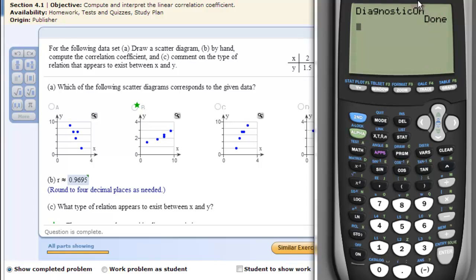Now we have the explanatory variable which is the x values in list 1 and the response variable in list 2, in case you do this independently of what we're doing right now.